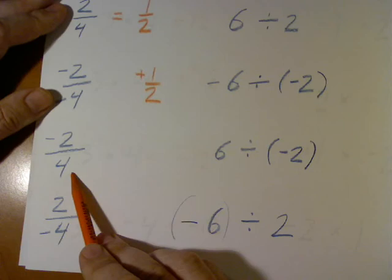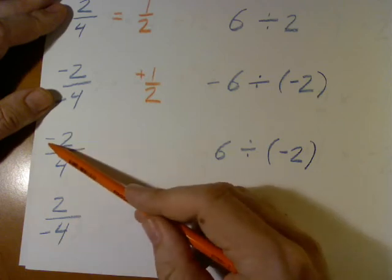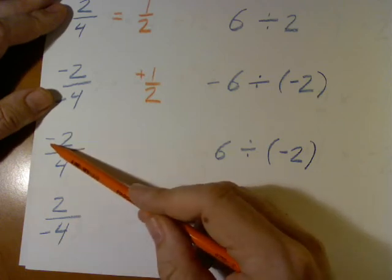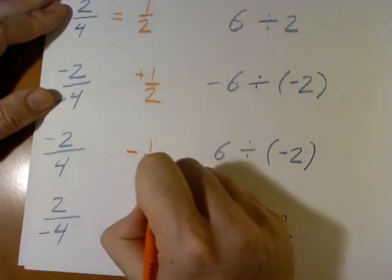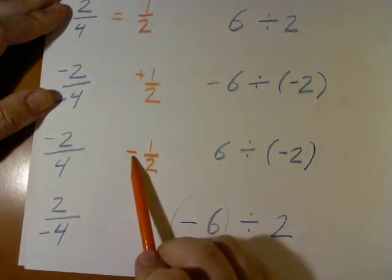Negative 2 over positive 4. There's only one negative. Does that mean it's positive or it's negative? It means it is negative. Now if it's negative, we always put the minus sign there.